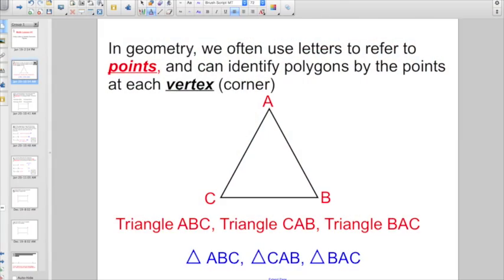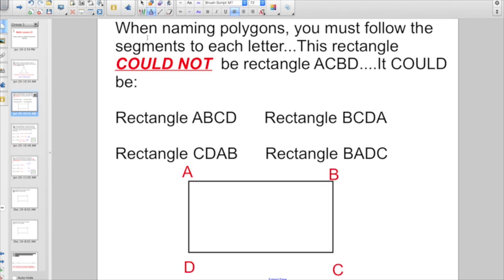In geometry, which is the study of shapes, we often use letters to refer to points. You can identify polygons, which are just the shapes, by the points at each vertex, which is a fancy geometric term that just means corner. If you had this triangle here with three points labeled A, B, and C, you could call this triangle ABC, or you could call it triangle CAB, or you could even call it triangle BAC. You would either have to write the word triangle, or you could abbreviate by writing a tiny little triangle. But if you just write BAC without identifying that you're trying to describe a triangle, then it would be wrong.